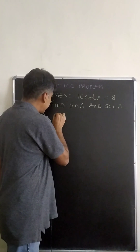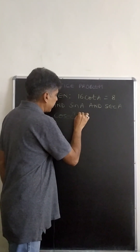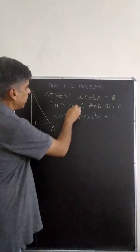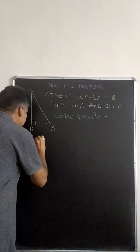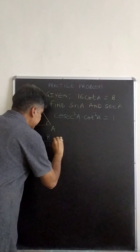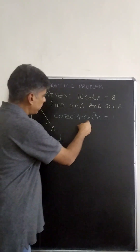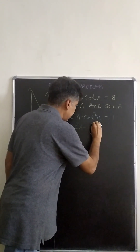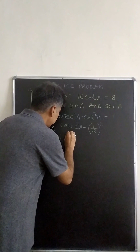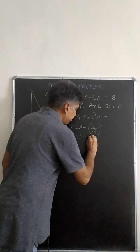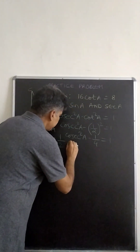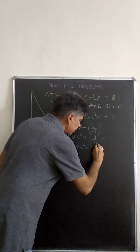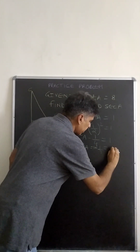In our earlier video, we have seen that cosec²A minus cot²A equals 1. Now, from 16 cot A equals 8, we get cot A equals 8 upon 16, which comes out to be one half. Substituting this value, we get cosec²A minus one half squared equals 1, that is cosec²A minus 1 upon 4 equals 1. Taking 1 upon 4 to the right hand side, cosec²A equals 1 plus 1 upon 4, which comes out to be 5 upon 4.